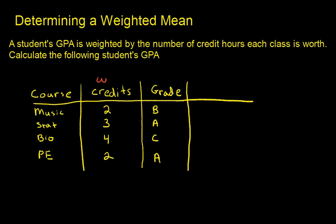The grade is the data value. When we take a GPA, a B is worth three points, so basically that B is representing a three. An A is worth four points. A C is worth two and then this A again is worth four. So these values three, four, two, four, these are the actual data values.